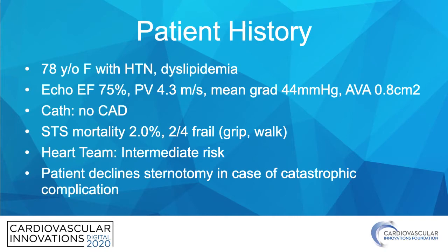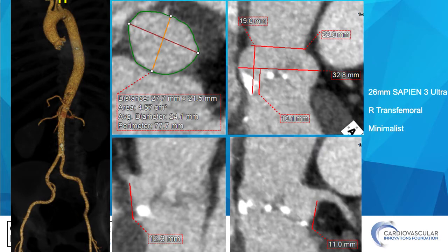Importantly, the patient declined a sternotomy in case of catastrophic complication — something we specifically review with each patient during our multidisciplinary valve clinic. Reviewing her anatomy, she had excellent femoral access from both sides. Her annulus measured 457 squared millimeters, sizing to a Sapien III Ultra 26mm valve. Her coronary heights were slightly on the low side, but her sinuses of Valsalva were quite large, and we felt this would be no problem.